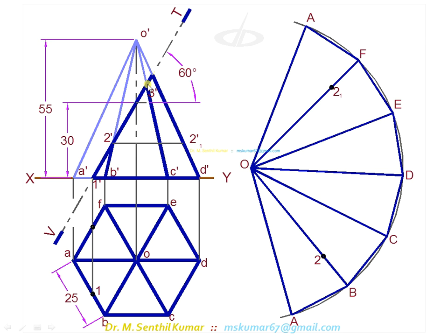For 3, transfer the point 3 dash onto TSL by drawing horizontal line. Now take the length of O dash 3 dash. With that length, mark 3 on OC, 3 on OE.